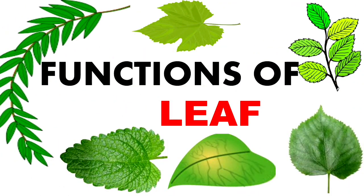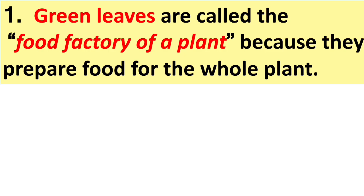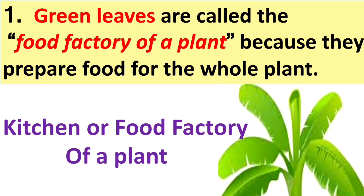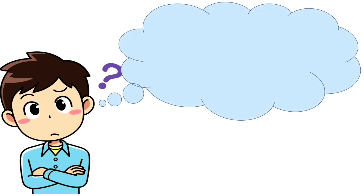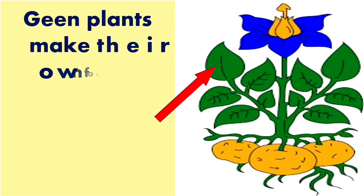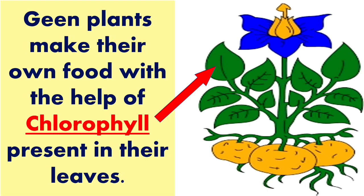Now let's see what are the functions of the leaf. Green plants make their own food. Can you tell me which part of a plant prepares food? Yes, green leaves prepare food for the whole plant, and because of this, leaves are also known as the kitchen or food factory of a plant. Green plants make their own food with the help of chlorophyll present in their leaves. But what about plants that have no leaves, like cactus? In desert plants like cactus, chlorophyll is present in their stems, so the stems make and store food.